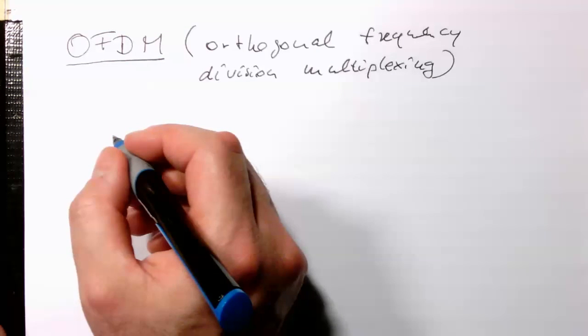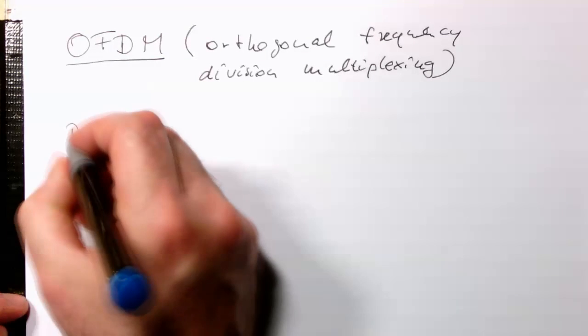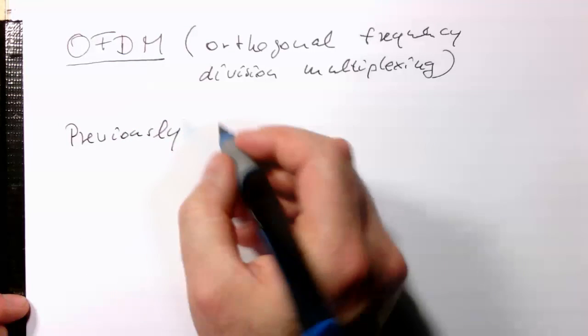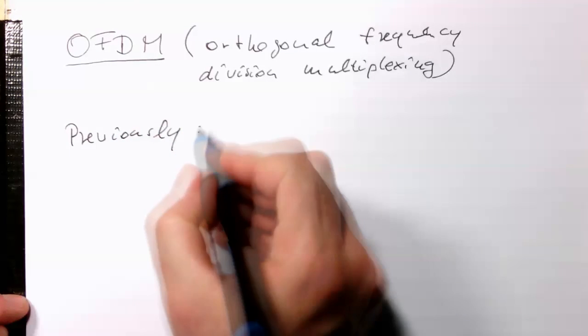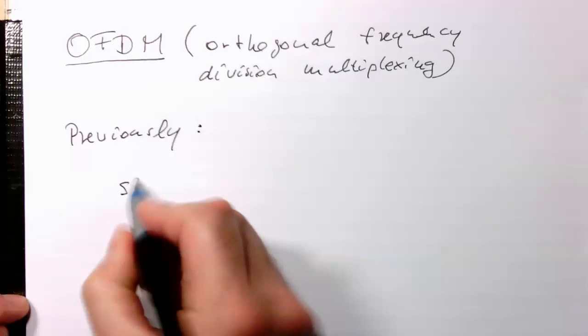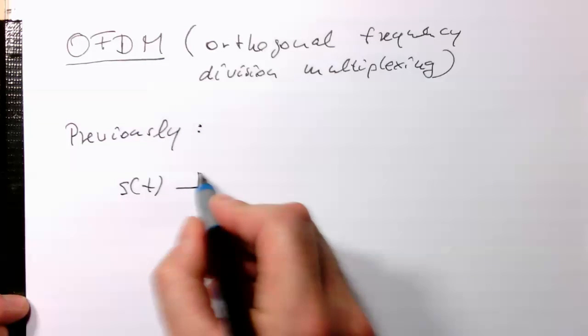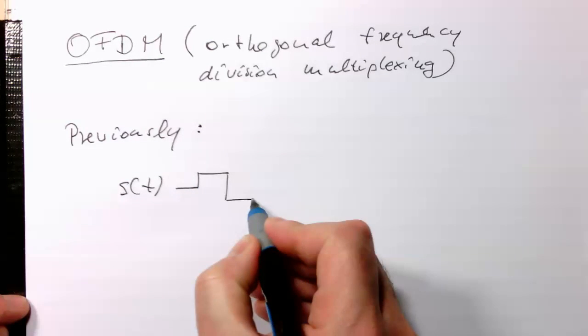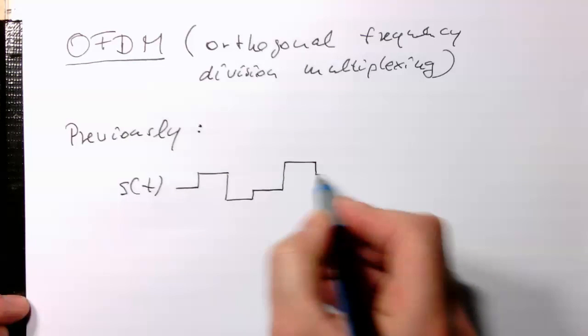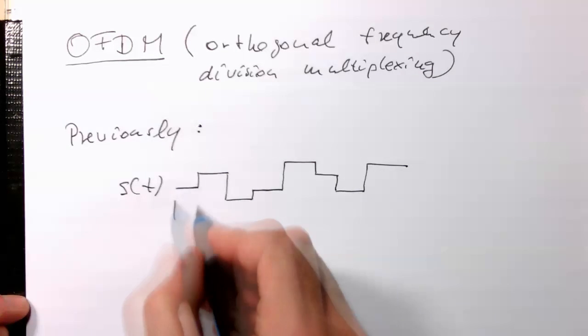And so what is the motivation behind OFDM? So remember previously we had symbols with essentially symbols with constant value. Of course we smoothed them out a bit but our symbols looked like this where we think of QWAM. So we had constant values and they were coding certain numbers and they were lasting T.